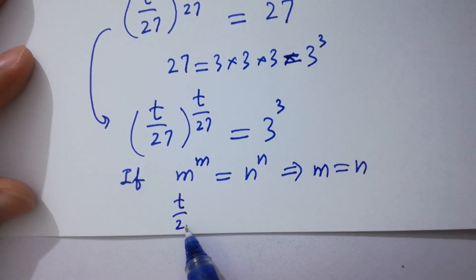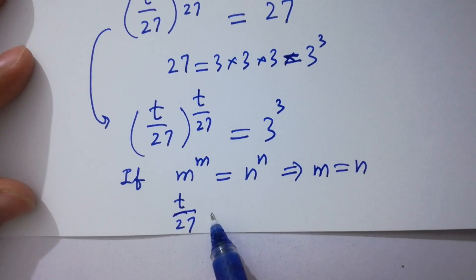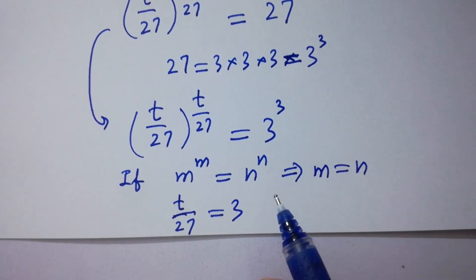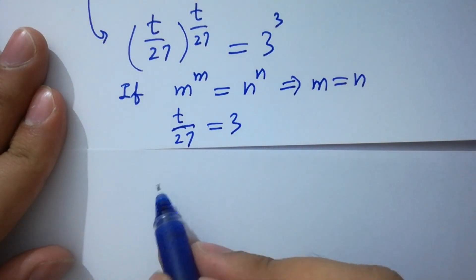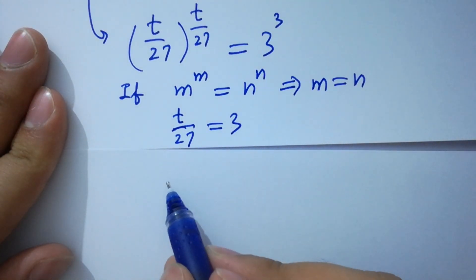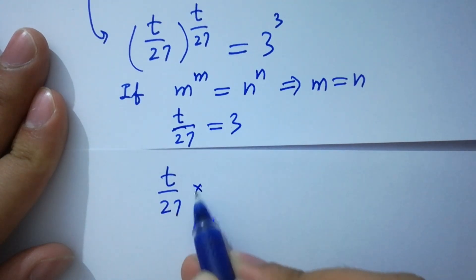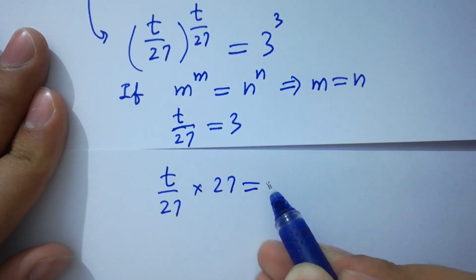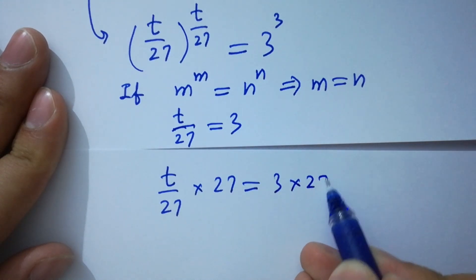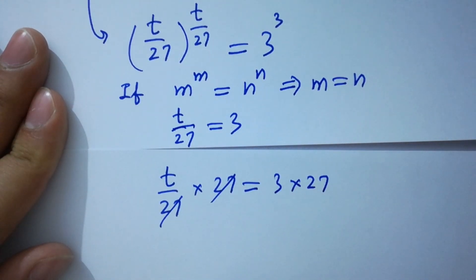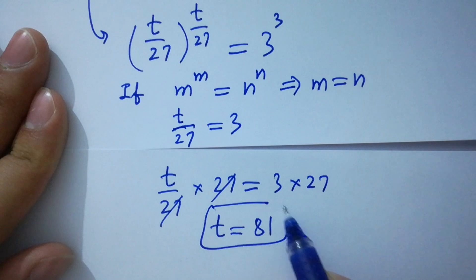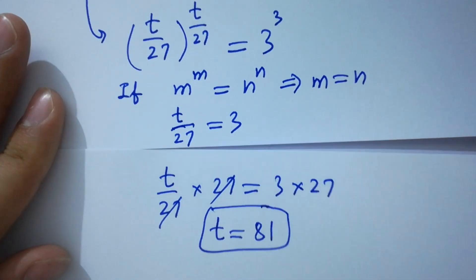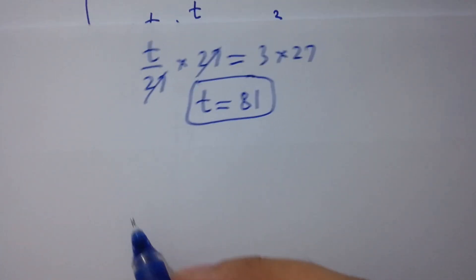So it will be t over 27 equals 3. Multiply by 27 on both sides: t over 27 times 27 equals 3 times 27. The 27s cancel to get t equals 27 times 3, which is 81. That is the value of t. In the next step I am going to verify.